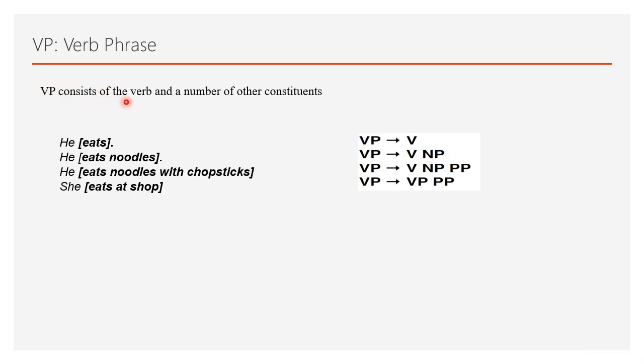Verb phrase consists of a main verb along with some modifiers. He eats. Eat is a verb phrase here. Verb phrase can be a verb. He eats noodles. So verb phrase can be verb followed by a noun phrase. He eats noodles with chopsticks. So this all term in the bracket constitute the verb phrase. Here the main verb is eat. Verb phrase can be verb, noodles, that is NP with chopsticks. That means PP. Eat at shop. Eat is the main verb here. So this one is a verb phrase. So VP can be VP at shop. That is VP.